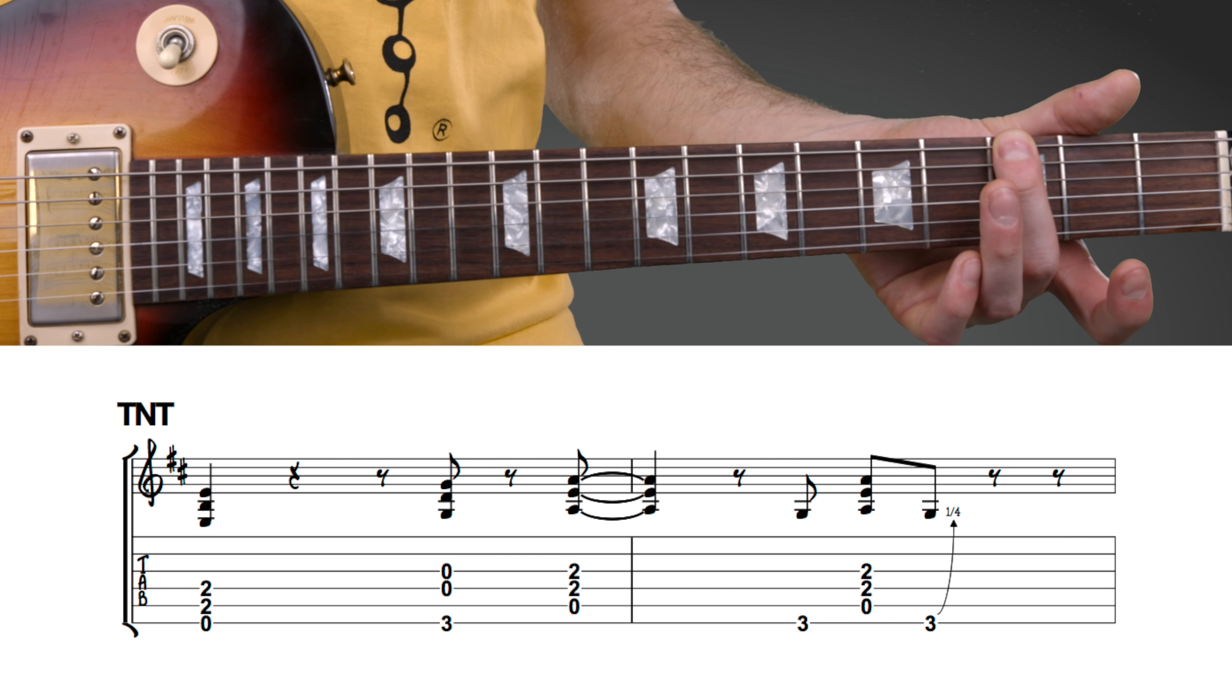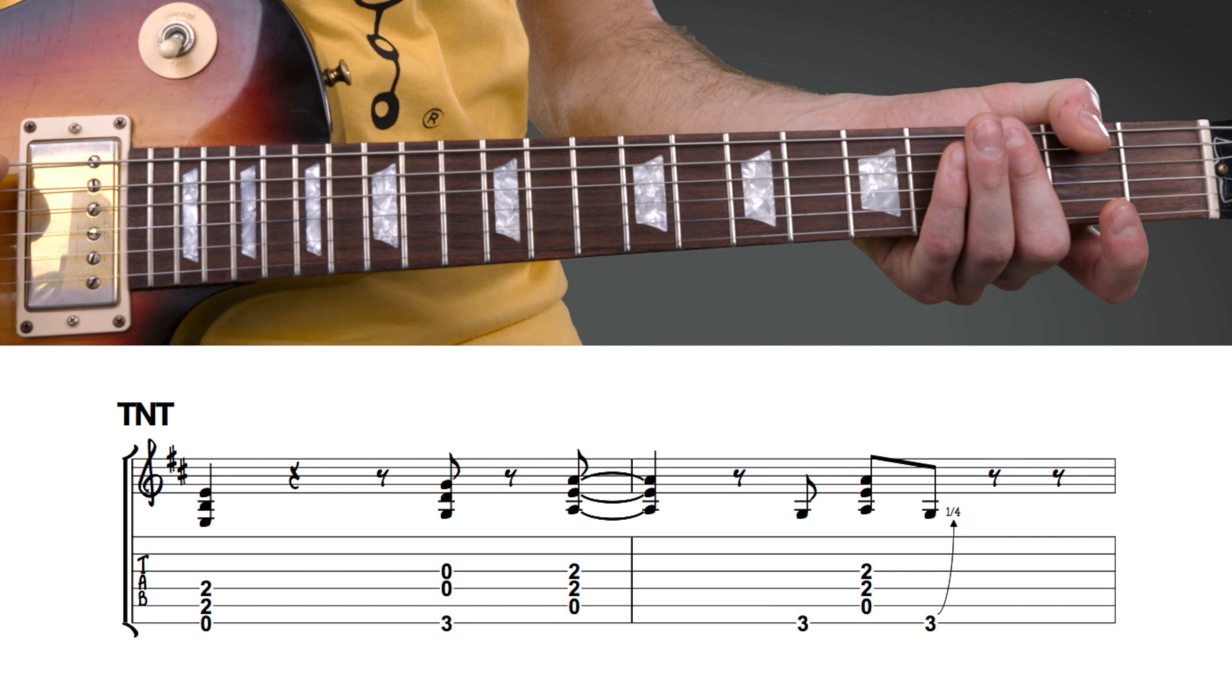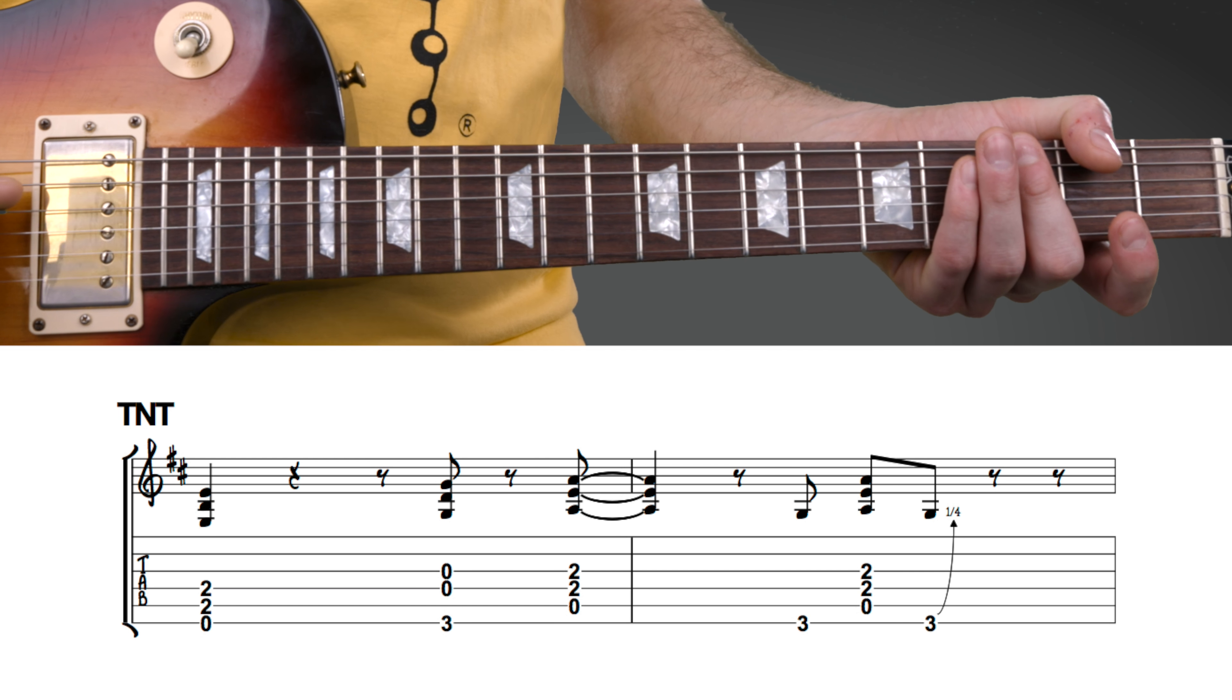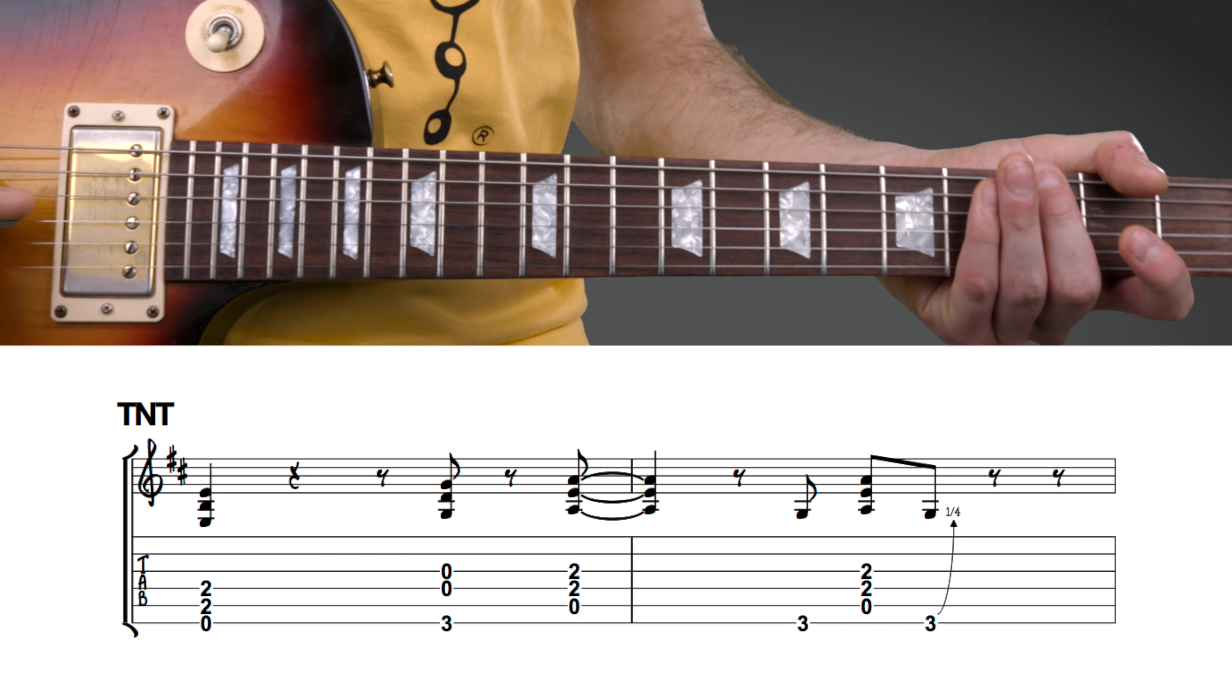We play the third fret on the top string and keep it fairly flat because we want to mute the fifth string. Then we do open four and open string three.